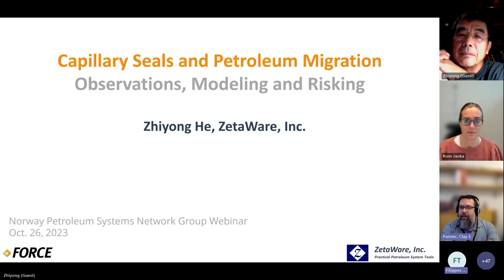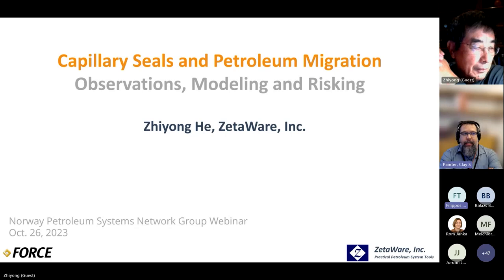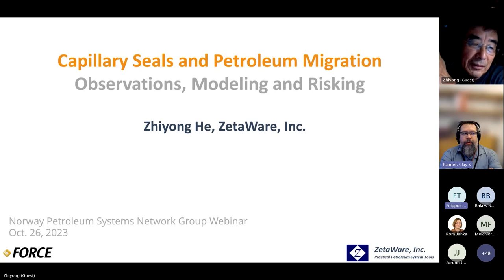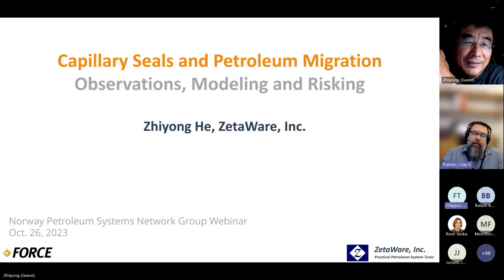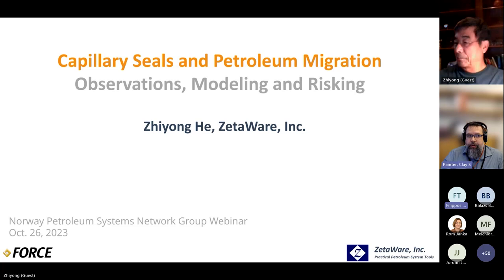A little bit about Zhiyong. He received his PhD from the University of South Carolina, and then he was a researcher at Atlantic Richfield — ARCO — for 10 years. Then in the year 2000, somewhat coincident with when they got bought out by BP, he founded ZetaWare, which has grown into the software package that many of us lean on heavily: Trinity, Genesis, Kinex.